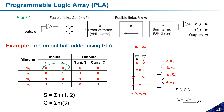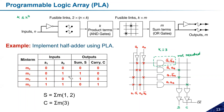On the output side, we connect product terms 1 and 2 for Sum and product term 3 for Carry. Again, the fourth AND gate (A1-bar·A0-bar) is not needed, so k becomes 3 in this case as well. This is how PLA differs from PAL — both arrays are programmable in PLA.